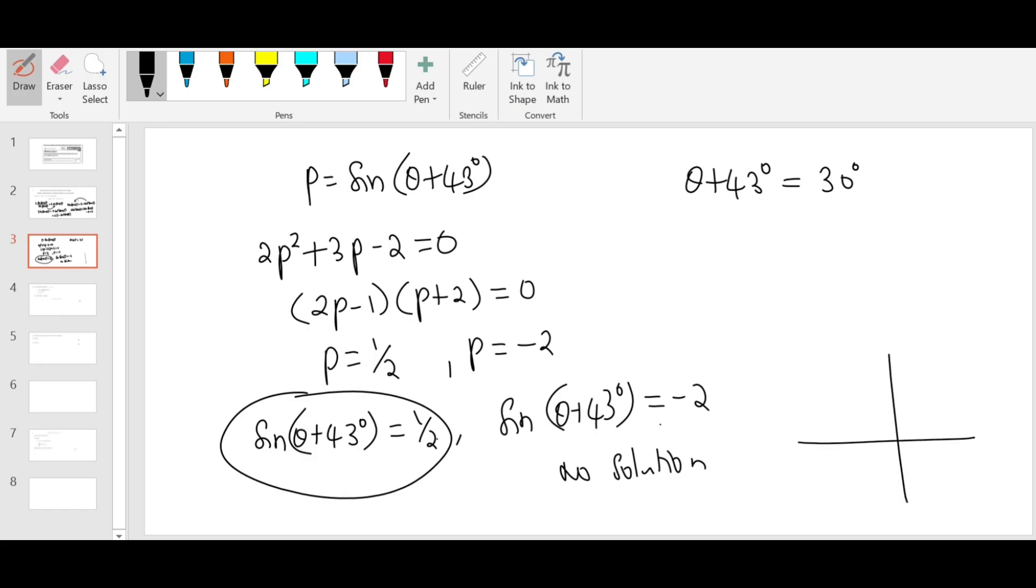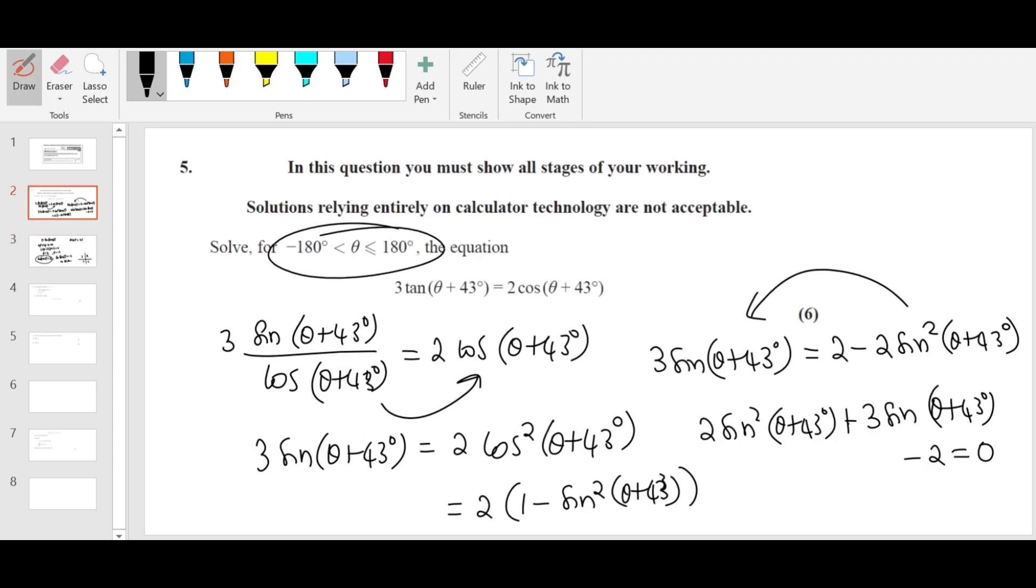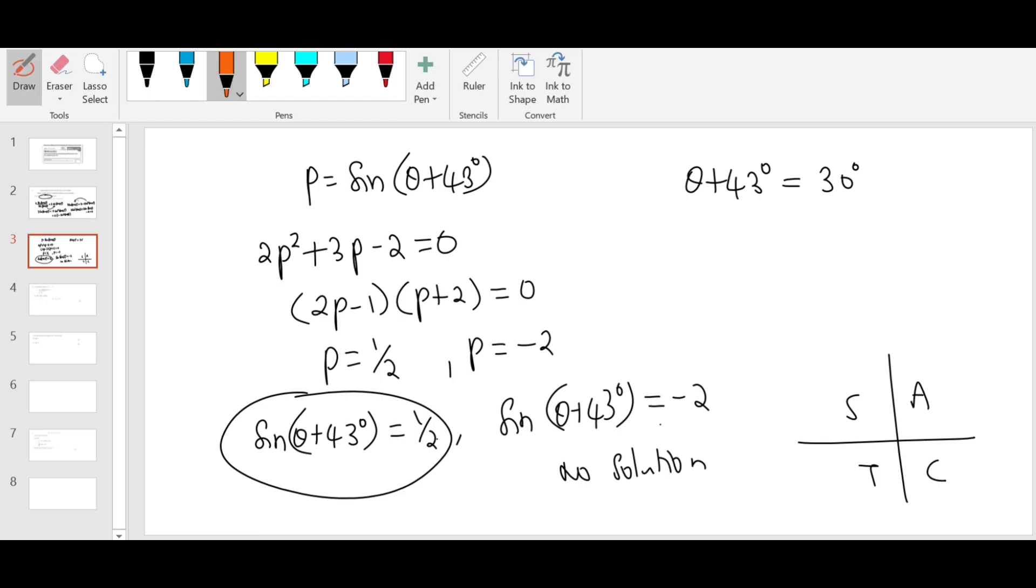Now we use the ASTC diagram. Look at the limit given in the question: it's minus 180 to 180. So this is 0 to 180, this is 0 to minus 180. Sine will be positive here and here. So it's theta here, 180 minus theta here. So theta plus 43 equals theta, which is the principal value, or 180 minus theta. 180 minus theta is 150 degrees. Now subtract 43. You got the answer: minus 13 degrees and 107 degrees. That's the final answer.